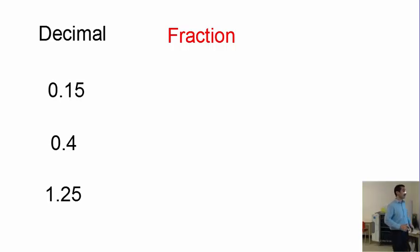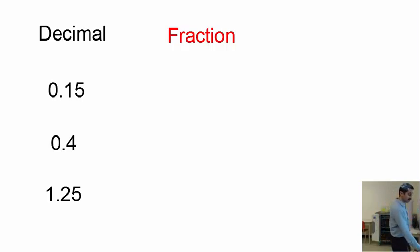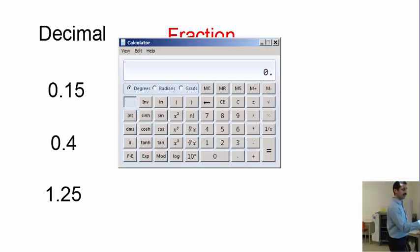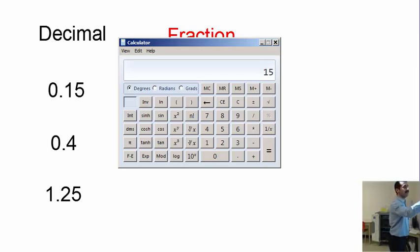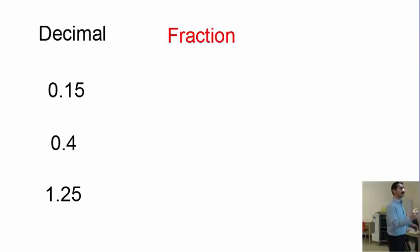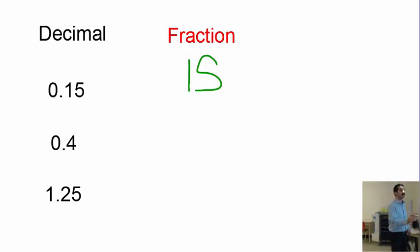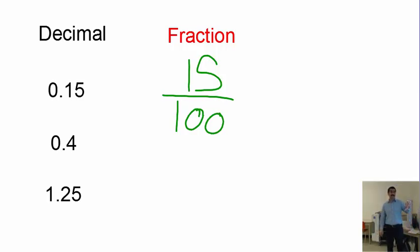Whatever numbers you see in the decimal, multiply that by 100. So I see 0.15 — multiply 0.15 by 100, which equals 15. Write 15 as the numerator and 100 as the denominator, giving you the fraction 15 over 100.